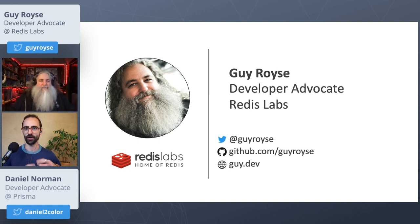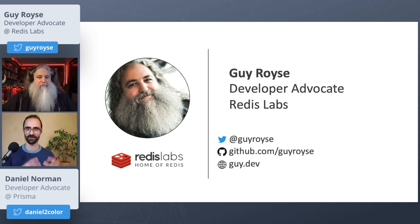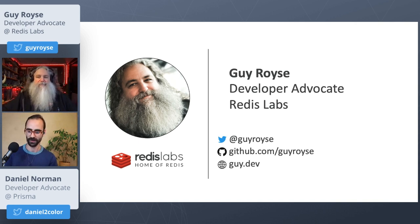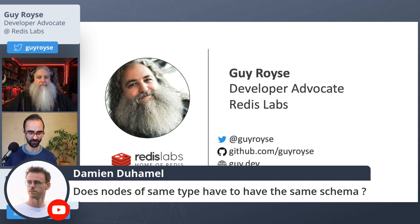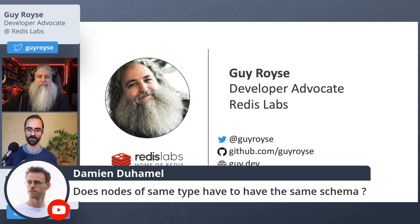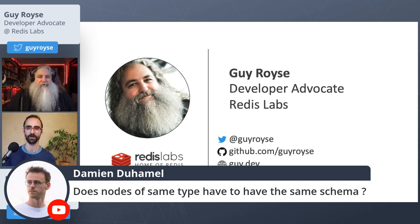From Damien's question: do nodes of the same type have to have the same schema? No — they can be whatever they want, there aren't any rules, so you can make something really messy if you wanted to.